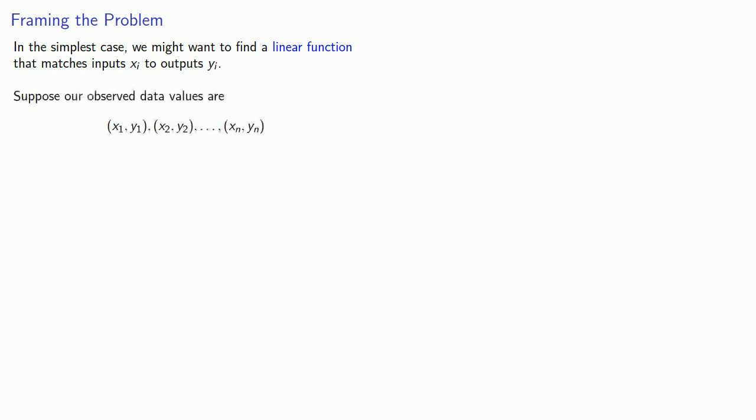So let's try to set up this problem. In the simplest case, we might want to find a linear function that matches inputs xi to outputs yi. Suppose our observed data values are a set of ordered pairs, and we want to predict the y's from the x's using a linear function. The function will have the form y equals a1x plus a2, where a1 and a2 are unknown parameters.